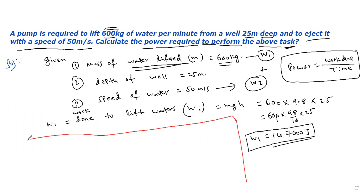Next, work done to give kinetic energy. W2 equals half Mv squared. Half into mass 600 into V squared, which is 50 squared. 300 into 50 squared equals 75,000.